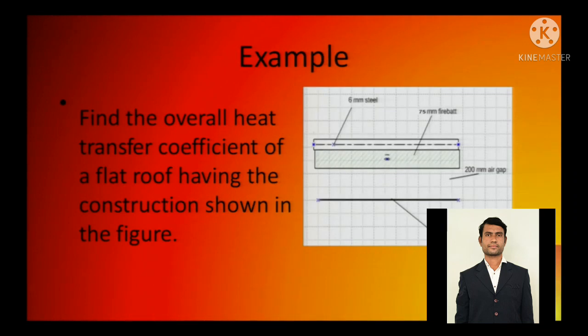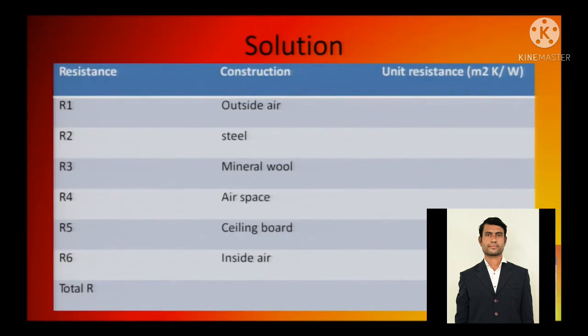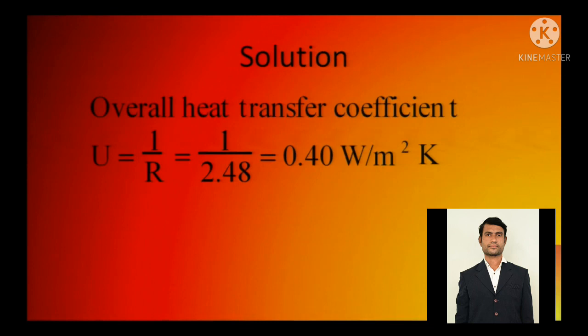Example is the same thing, we will actually solve this example. See, this is a 6 mm steel, 75 mm of firebat, 25 mm of air gap and 20 mm of sealing board. This is basically a practical example and we will solve practical examples later on. So I will take another lecture particularly to solve how to do this practically. Now I will talk about the practical - see we will fill these columns: outside air, steel, mineral wool, air space, sealing board and inside air. The resistance column is blank here. So I will tell you how engineers do it professionally. How engineers do it professionally, I will tell you how to solve it. Theory is enough, now practical things has to be done. So solution, we will calculate this solution.